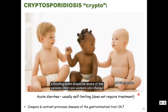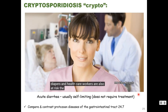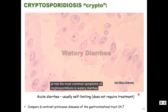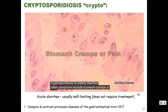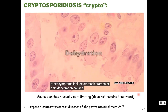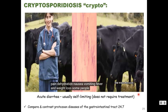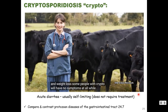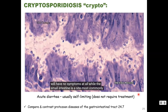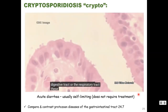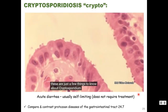Child care workers who change diapers and health care workers are also at risk. The most common symptom of cryptosporidiosis is watery diarrhea. Other symptoms include stomach cramps, dehydration, nausea, vomiting, fever, and weight loss. Some people with crypto will have no symptoms at all. While the small intestine is most commonly affected, crypto infections can also affect other areas of the digestive tract or the respiratory tract.